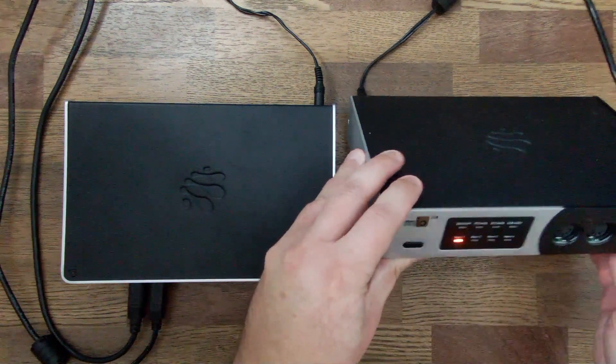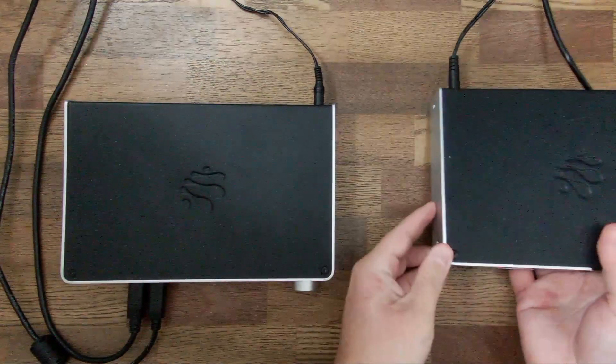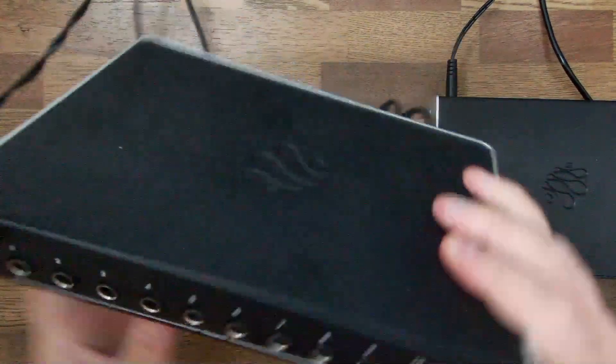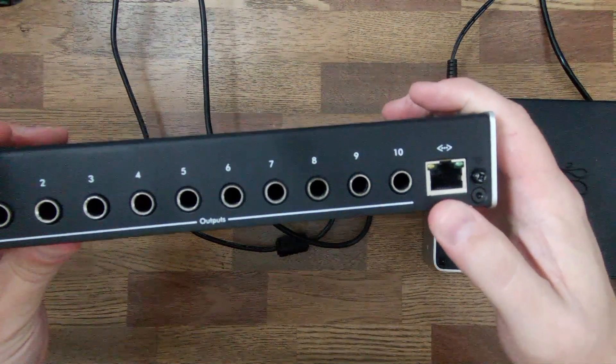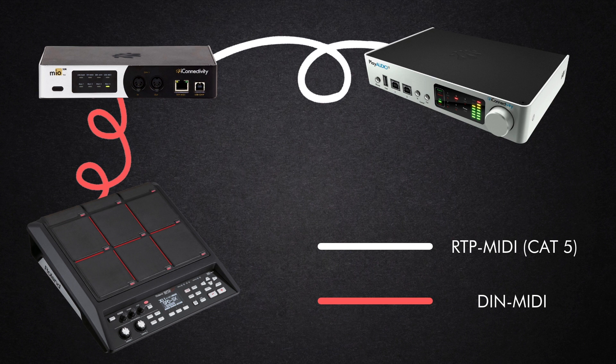How are we going to send that over a long distance? Well, if we look at our Mio XM, it has an RTP MIDI port, and on the back of the Play Audio 12 there's also an RTP MIDI port. We're going to connect these interfaces over a long distance using an ethernet cable — a direct connection from the Mio XM directly to the Play Audio 12. No IT people, no networking professionals at the venue; just a single ethernet cable connecting them directly.